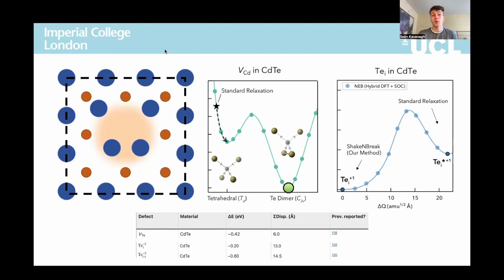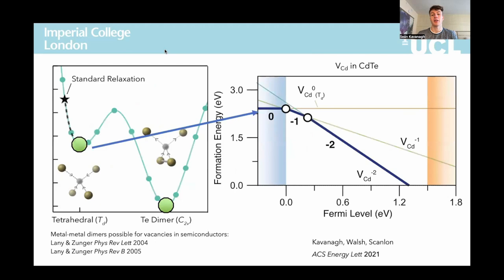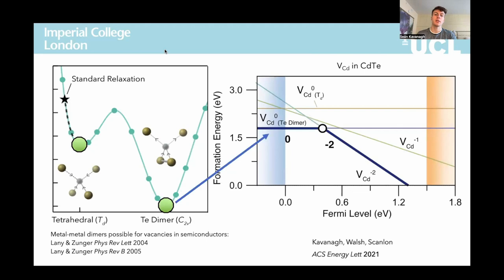As a defects researcher, this is where my reality started to come crashing down around me. Looking at my transition-level diagram, we can see that this dimer formation completely changes the picture — from having two shallow levels near the VBM for cadmium vacancies to now having a single, deep, negative-U level much closer towards the middle of the band gap, and also qualitatively altering the recombination behaviour of this defect. As I'll show later, in many cases the changes in behaviour are actually far more drastic than this.